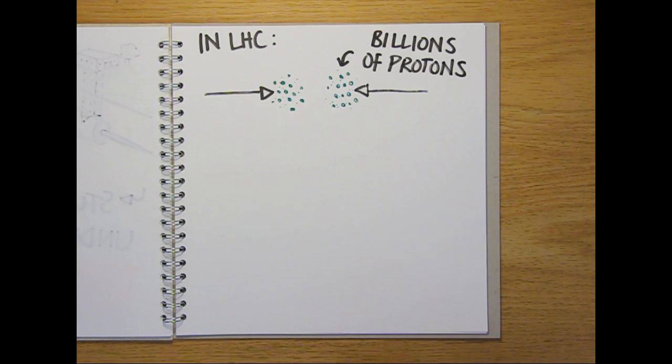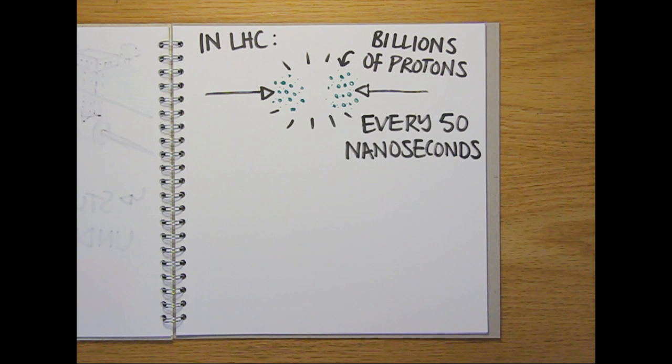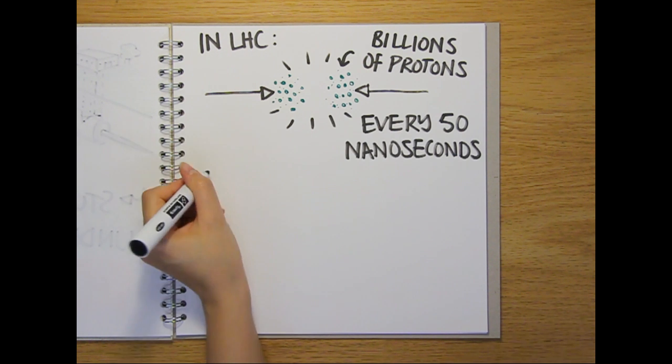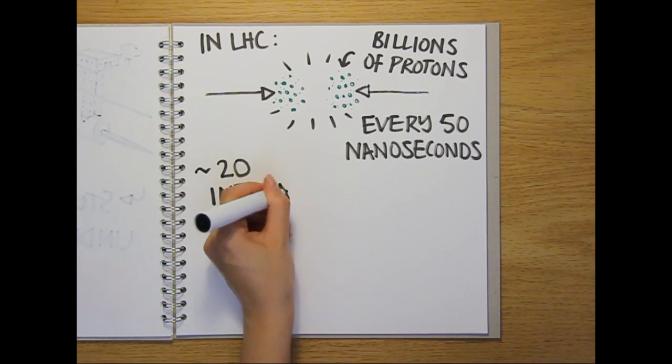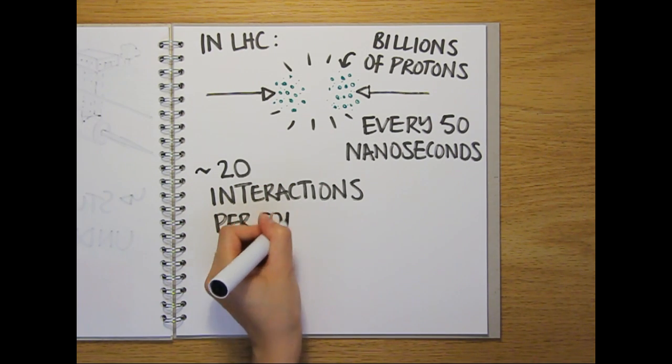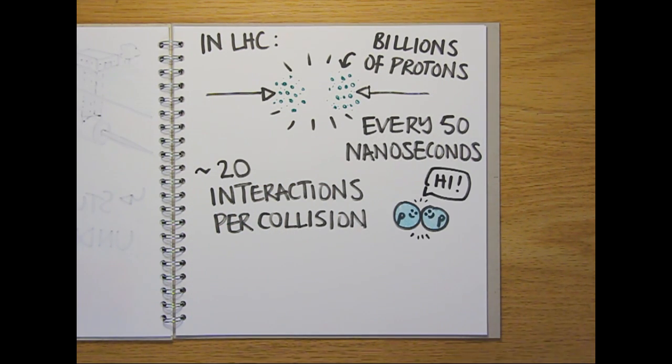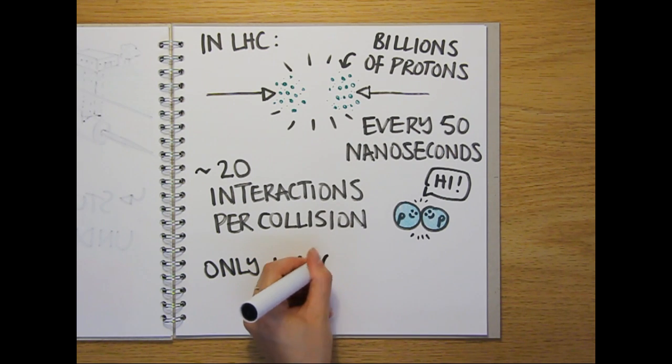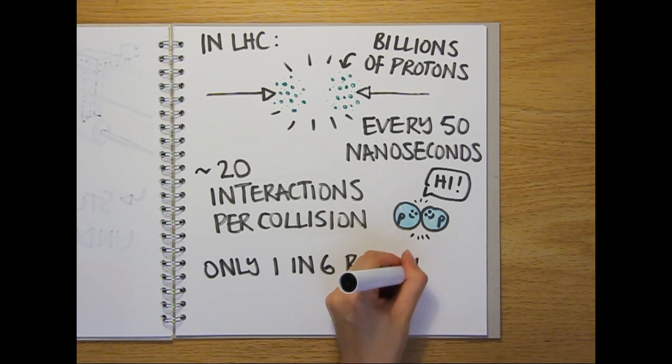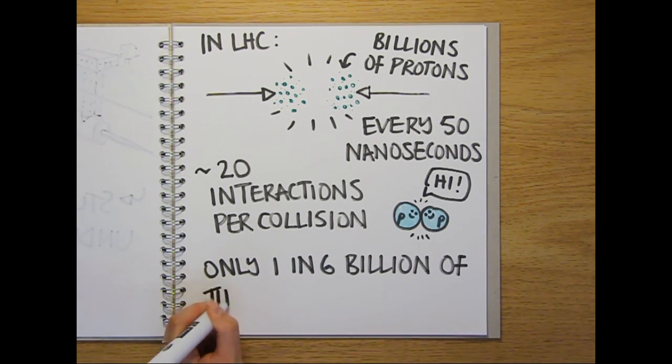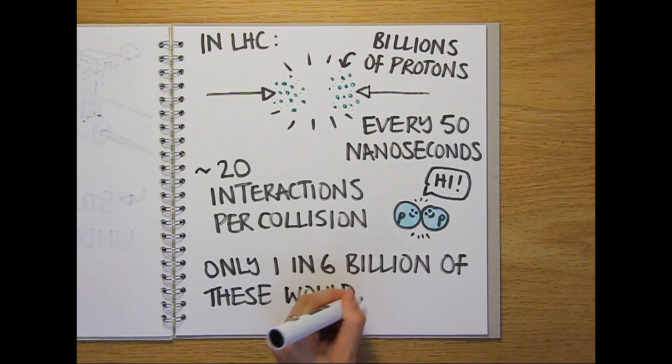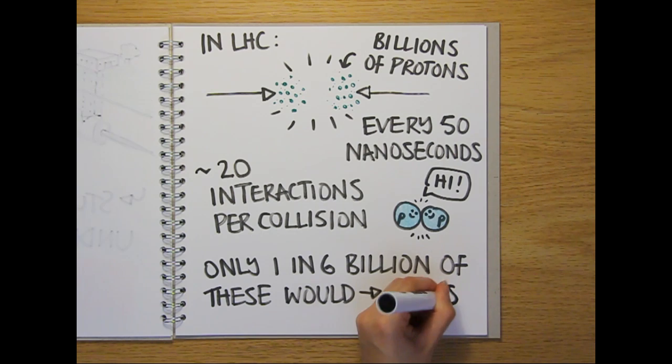In the LHC, bunches of protons are colliding every 50 nanoseconds. And out of the billions of protons involved, only around 20 interactions will happen with each collision. And even then, the chances of producing a new fundamental particle in the LHC are much lower than the chances of producing something we already know about. In fact, only about one in every six billion of these interactions would produce a Higgs boson.